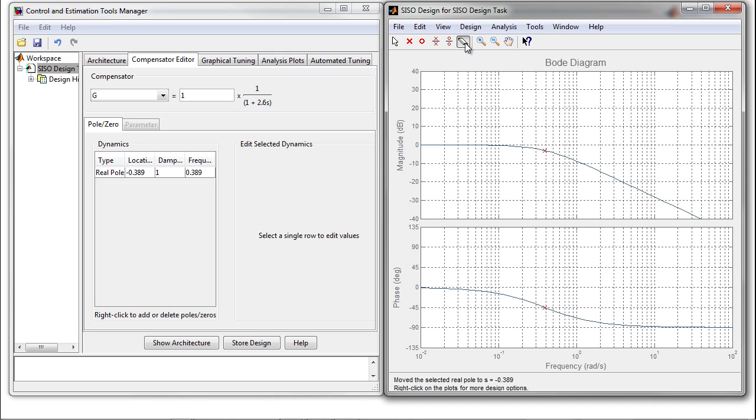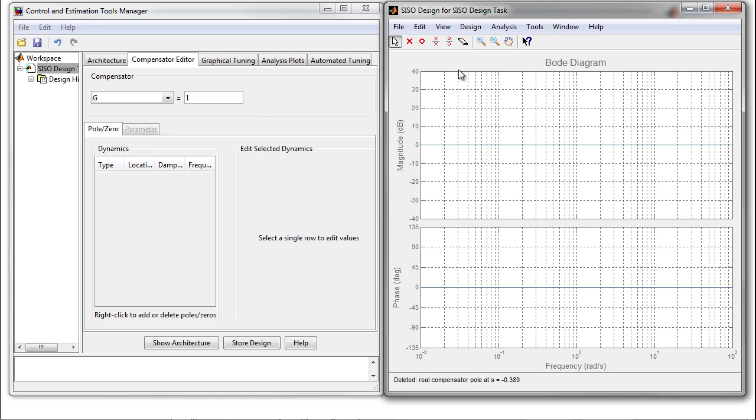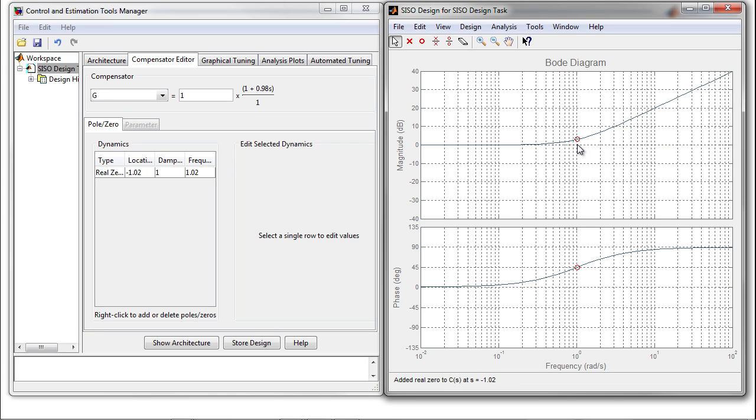Let's erase that pole and bring in a zero. As expected, now we see a positive break in the magnitude and a plus 90 in the phase. Notice that the magnitude of a pure zero goes to infinity at high frequencies. This is pretty undesirable behavior because, amongst other bad things, it will more than likely be amplifying all kinds of high-frequency noise on our system.